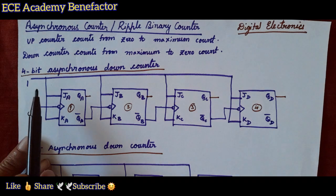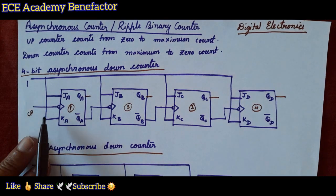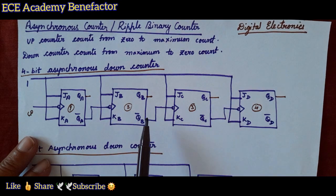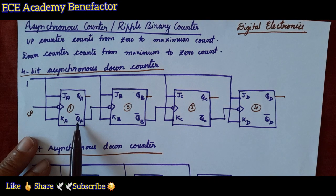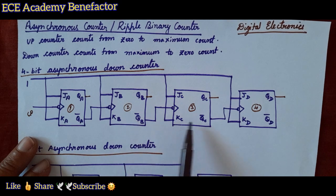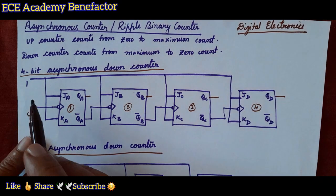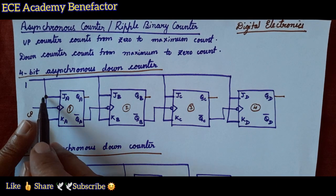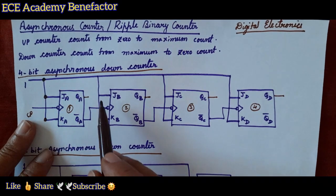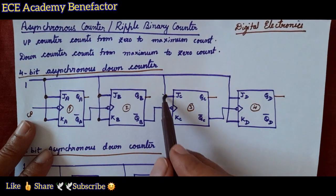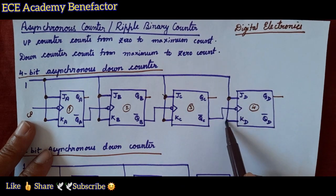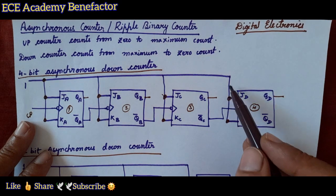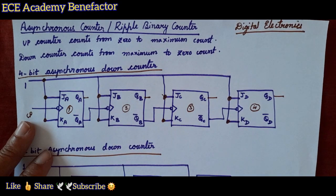Two important points: all the flip-flop inputs are connected to logic high, and the clock is coming from one flip-flop to the next. It is a down counter because the clock is coming from QA-bar, QB-bar, QC-bar, QD-bar. We should put dots to show connection points, to avoid confusion about whether lines are connected to logic high or not.